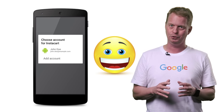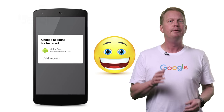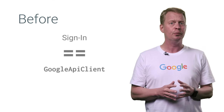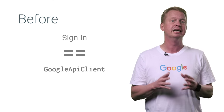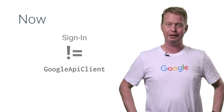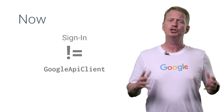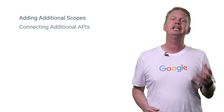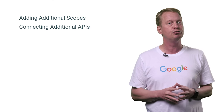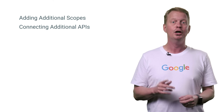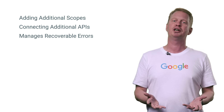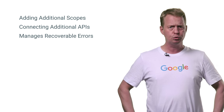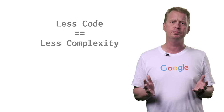You get even more with this new API, since it also simplifies your code. Before, the sign-in process was tightly entangled with the Google API client connectivity flow, making the code to connect multiple APIs difficult. But now they have been separated, leading to much simplified code. If your app adds additional scopes or connects APIs dynamically, then you don't need to write code to reconnect the Google API client. Also, the new sign-in flow has better support to manage recoverable errors, so you don't have to write as much code to deal with that. Less code means less complexity.